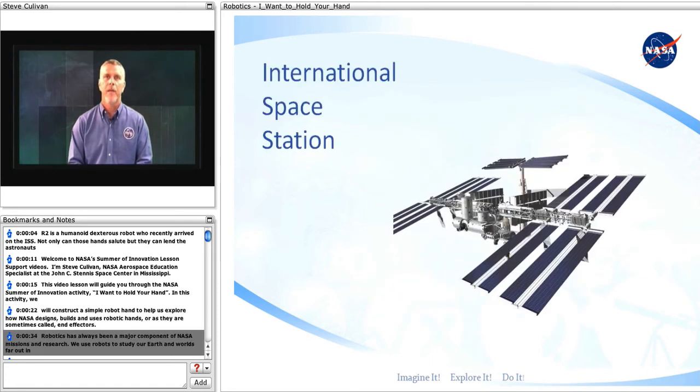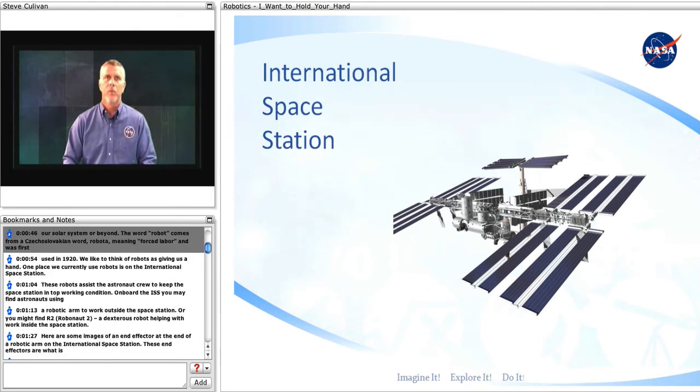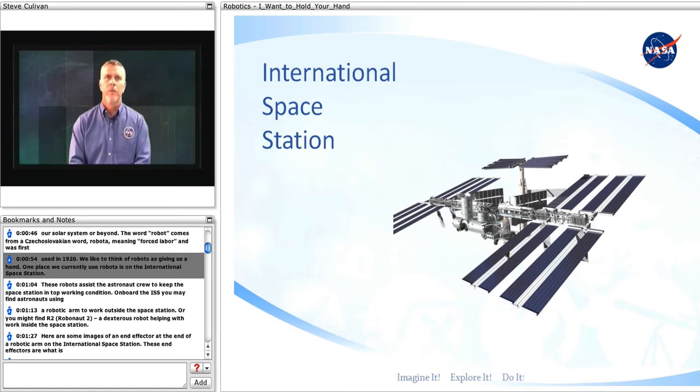Robotics has always been a major component of NASA missions and research. We use robots to study our Earth and worlds far out in our solar system or beyond. The word robot comes from a Czechoslovakian word, robota, meaning forced labor, and was first used in 1920. We like to think of robots as giving us a hand.